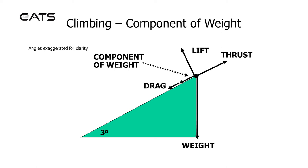Consider a right angle triangle where 3 degrees is the glide path. Lift is acting at a right angle to the flight path, thrust is acting forwards along the flight path, and drag is acting rearwards, with a component of weight also acting rearwards down the flight path and also vertically down.